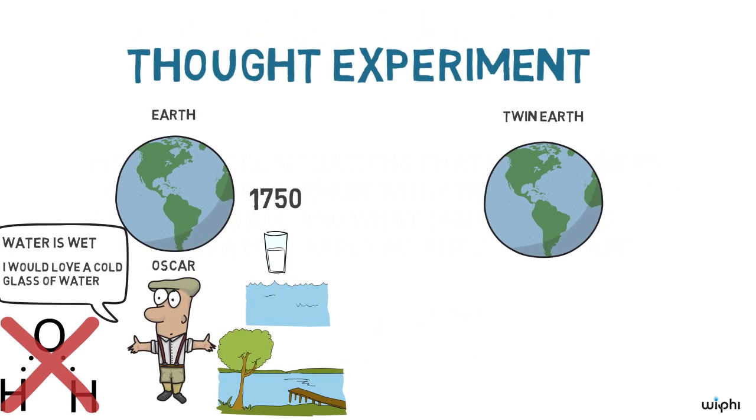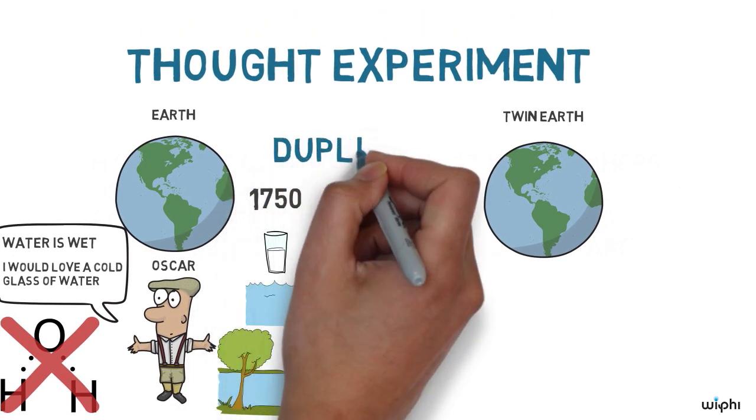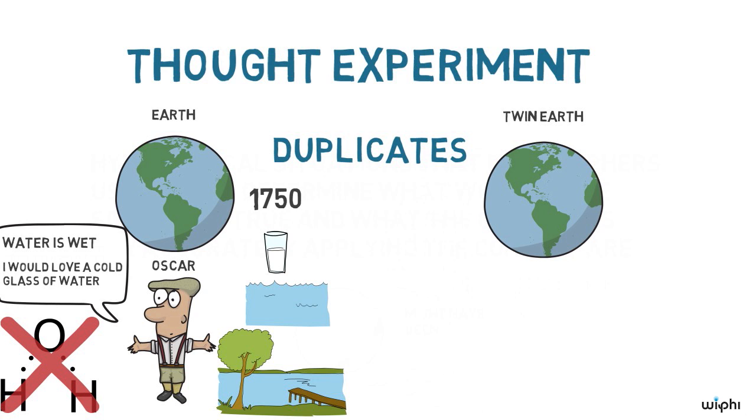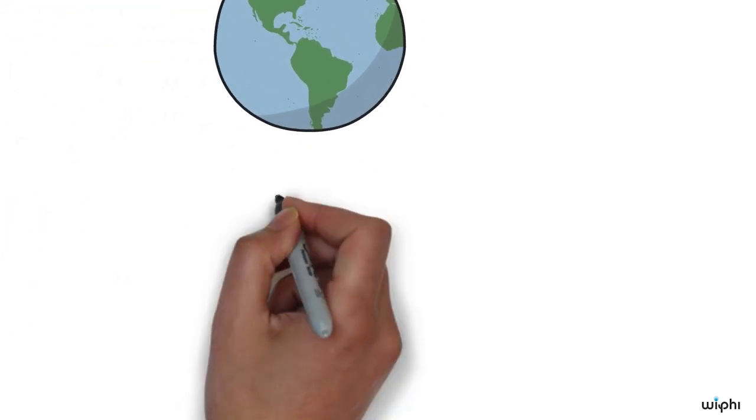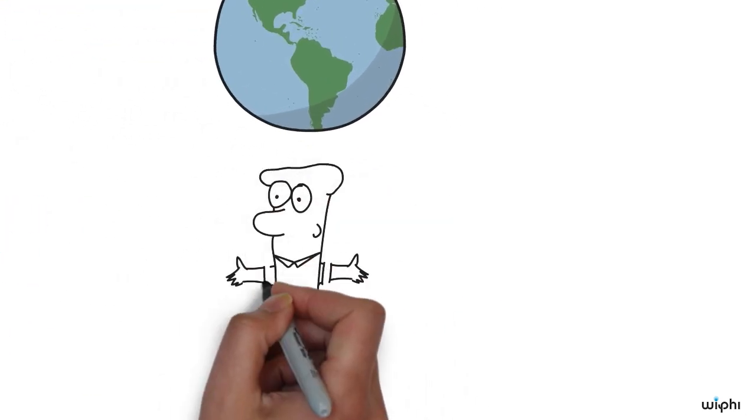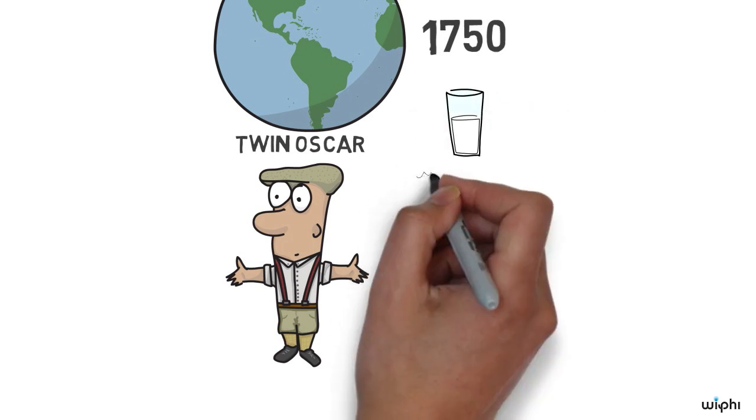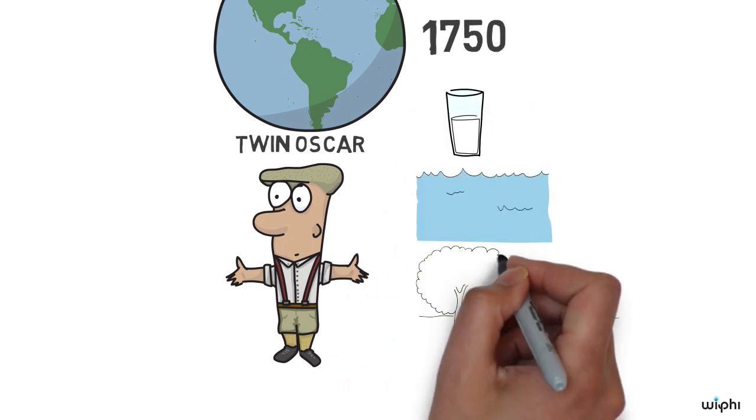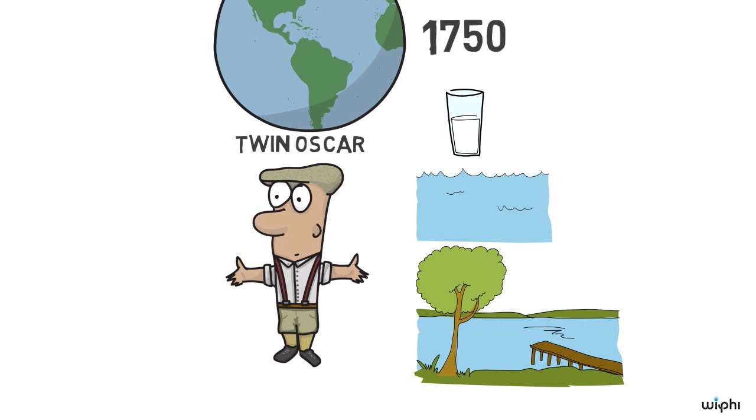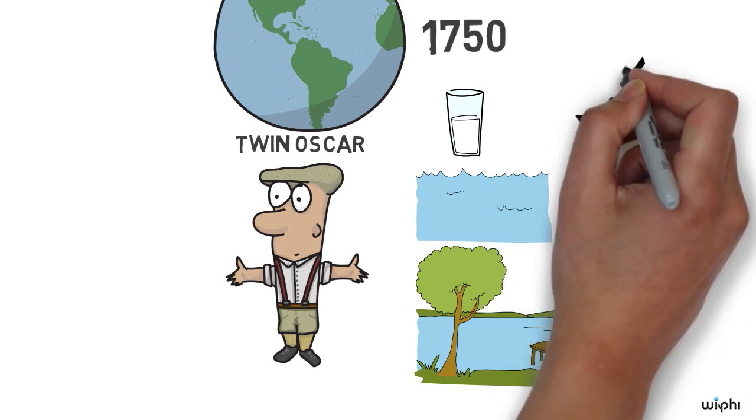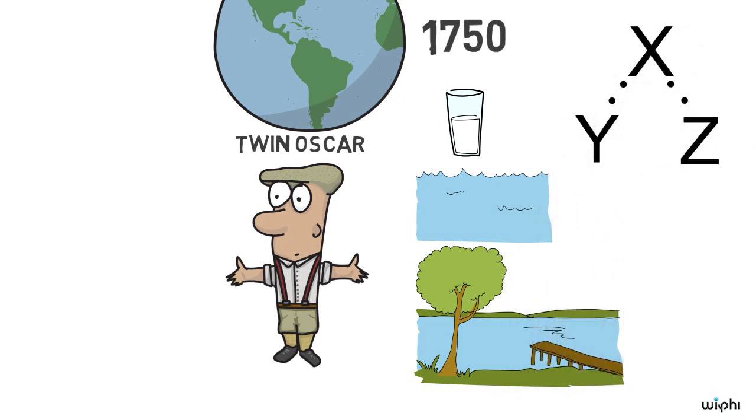Now, imagine another planet called Twin Earth. On Twin Earth, there are duplicates of everything on Earth. There's a duplicate Rome, a duplicate Nile River, there's a duplicate Oscar, we can call him Twin Oscar. Twin Earth looks just like Earth. However, the stuff that fills the lakes, streams, and taps on Twin Earth is not H2O. Instead, it has a distinct chemical structure. Call it XYZ.